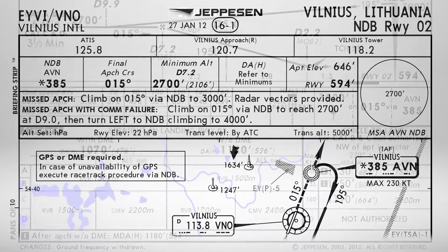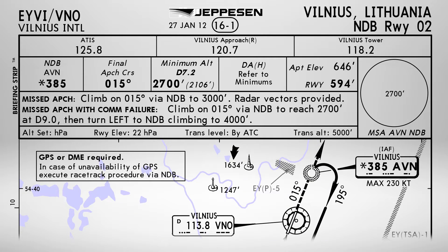Today we'll be flying an NDB-DME approach for runway 02 at Vilnius International Airport. On the top of the chart we can find the radio frequencies for communication, frequency of the beacon, final approach course, minimum altitude and elevation, and importantly the missed approach procedure: climbing on heading 015 via NDB to 3,000 feet then waiting for vectors. In case of communication failure, we climb on the same heading via NDB to reach 2,700 feet at distance 9 miles, then left to NDB climbing to 4,000 feet.